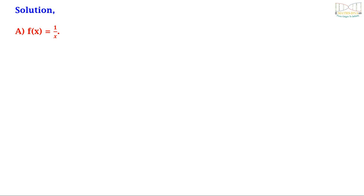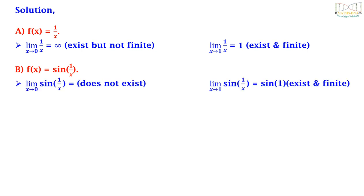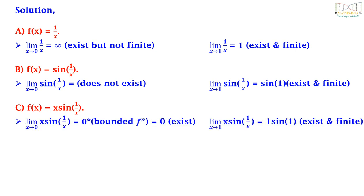Solution. Option A, f(x) = 1/x: the limit as x tends to 0 of 1/x equals infinity — existing but not finite — so option A is false. Option B, f(x) = sin(1/x): the limit as x tends to 0 of sin(1/x) does not exist as it is an oscillating function, so option B is not true. Option C, f(x) = x·sin(1/x): the limit as x tends to 0 equals 0 (zero times a bounded function), and the limit as x tends to 1 equals sin(1), existing and finite. So option C is true.